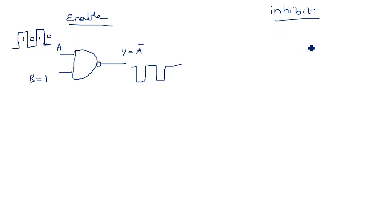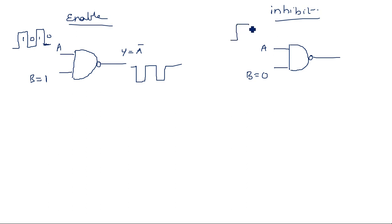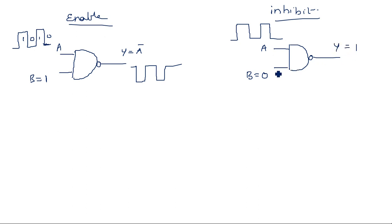Now do the same with zero input — inhibit case for NAND gate. B is fixed to zero and A is a clock signal. When one input of a NAND gate is zero, output is continuously one. There is no chance of getting zero because the other input is fixed, so Y = 1 always.